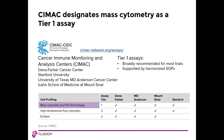Cancer Immune Monitoring and Analyzing Centers, or CMAC, have designated mass cytometry as a Tier I assay. The network defines Tier I assays as broadly recommended for most trials and supported by harmonized SOPs. Mass cytometry is currently used for cell profiling at Dana-Farber Cancer Center, Stanford University, MD Anderson Cancer Center, and the Icahn School of Medicine at Mount Sinai.